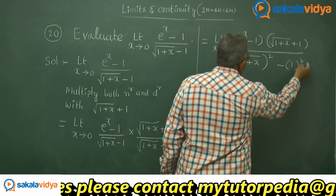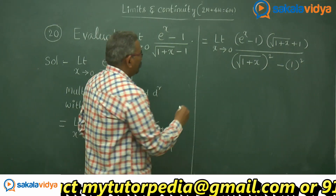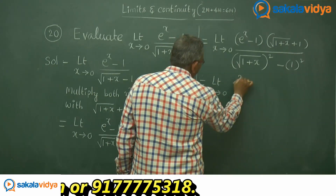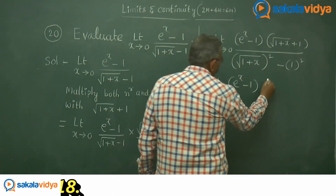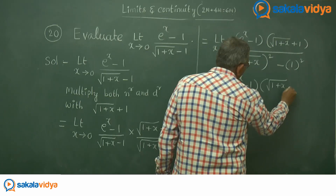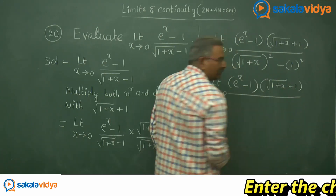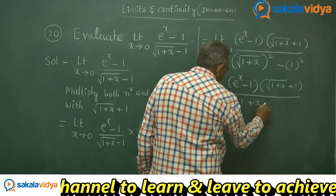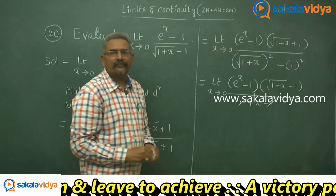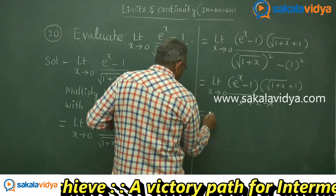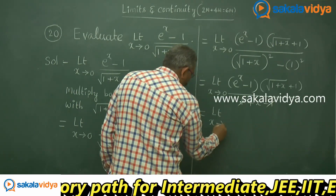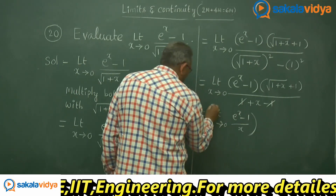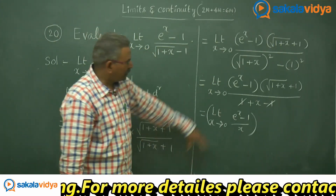So limit x tends to 0 of e power x minus 1, multiplied by root of 1 plus x plus 1, over x. This can be rewritten as limit x approaches to 0 of e power x minus 1 over x, multiplied by the same limit applied to root of 1 plus x plus 1.